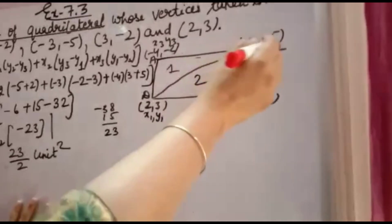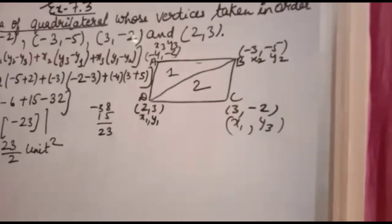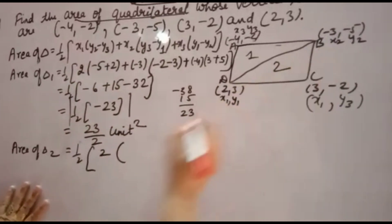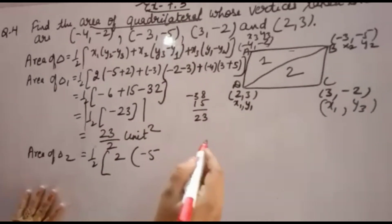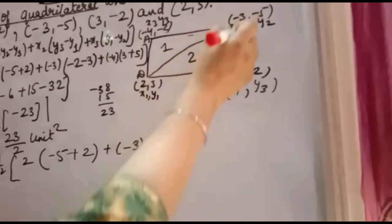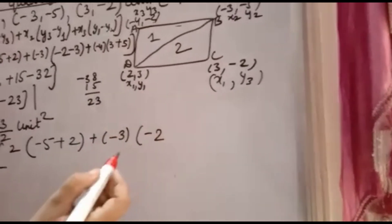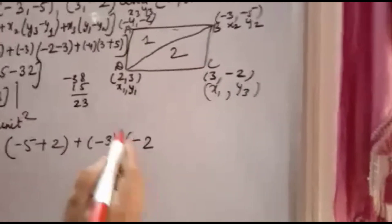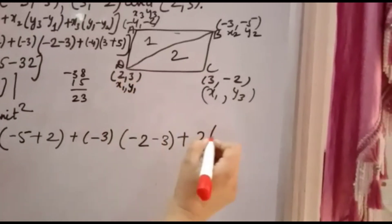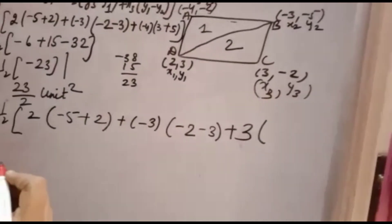For triangle 2, x1, y1 and x2, y2 remain the same. Use the same formula: x1 is 2, y2 is -5, minus y3 gives plus 2. x2 is -3, y3 is -2 minus y1, y1 is 3. Then x3 is 3.